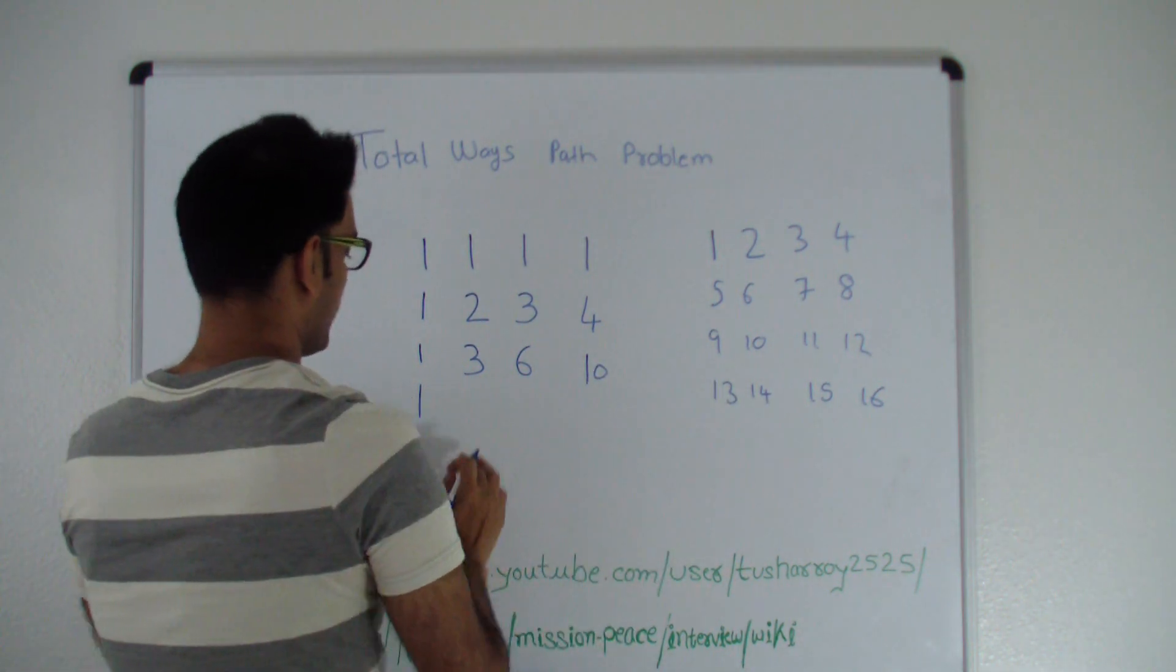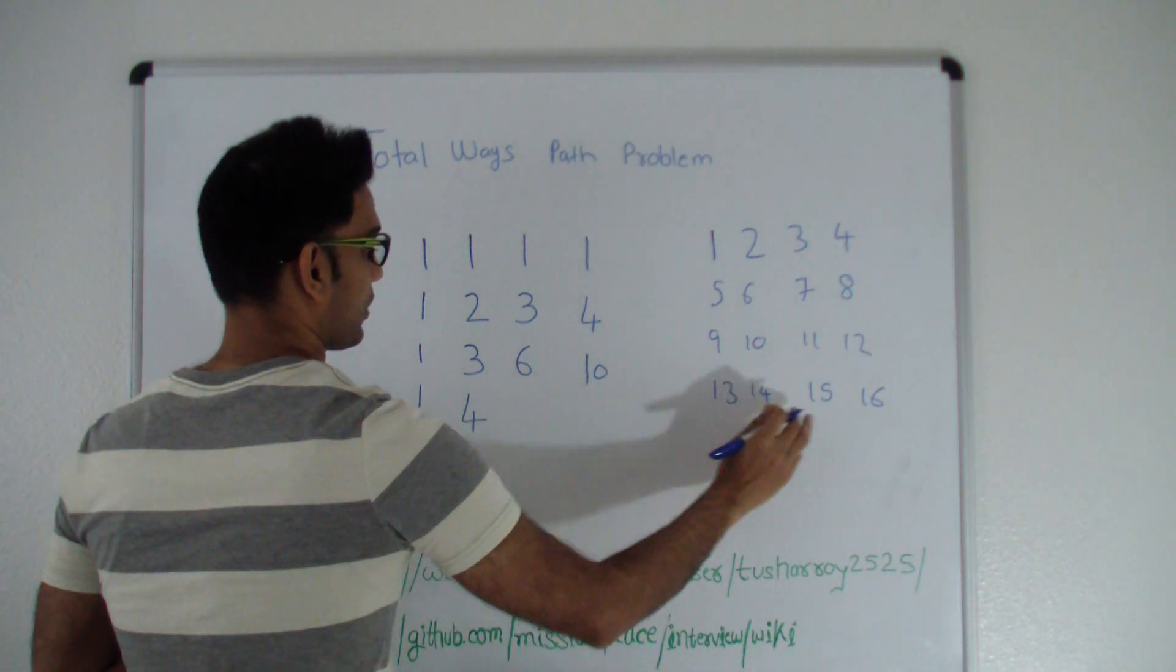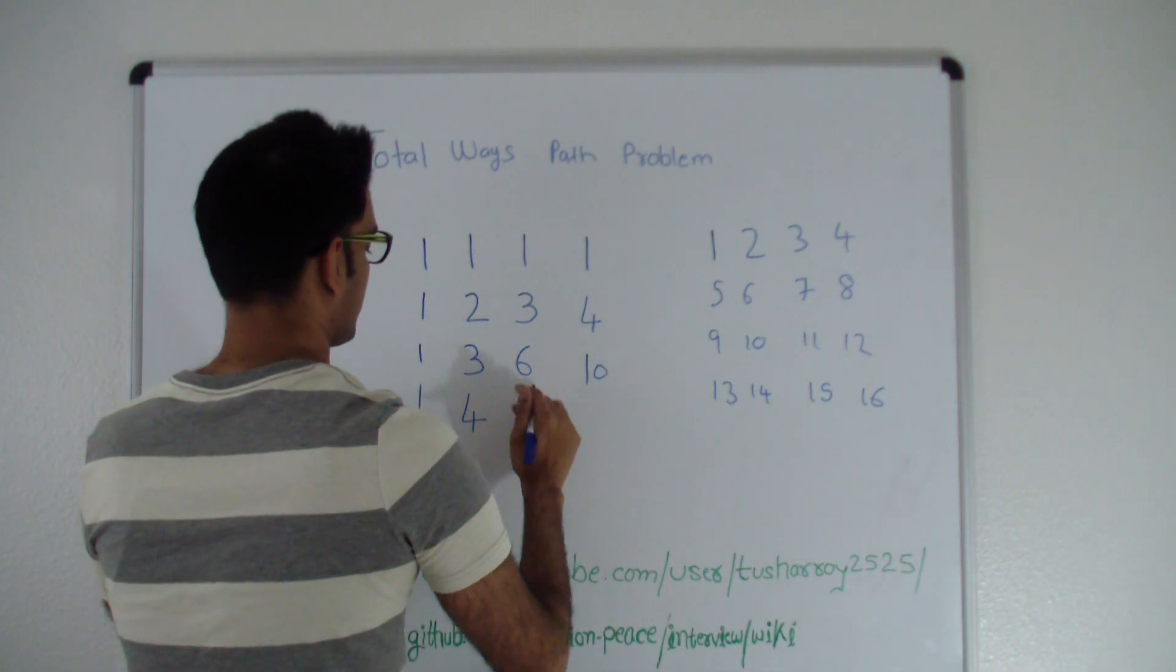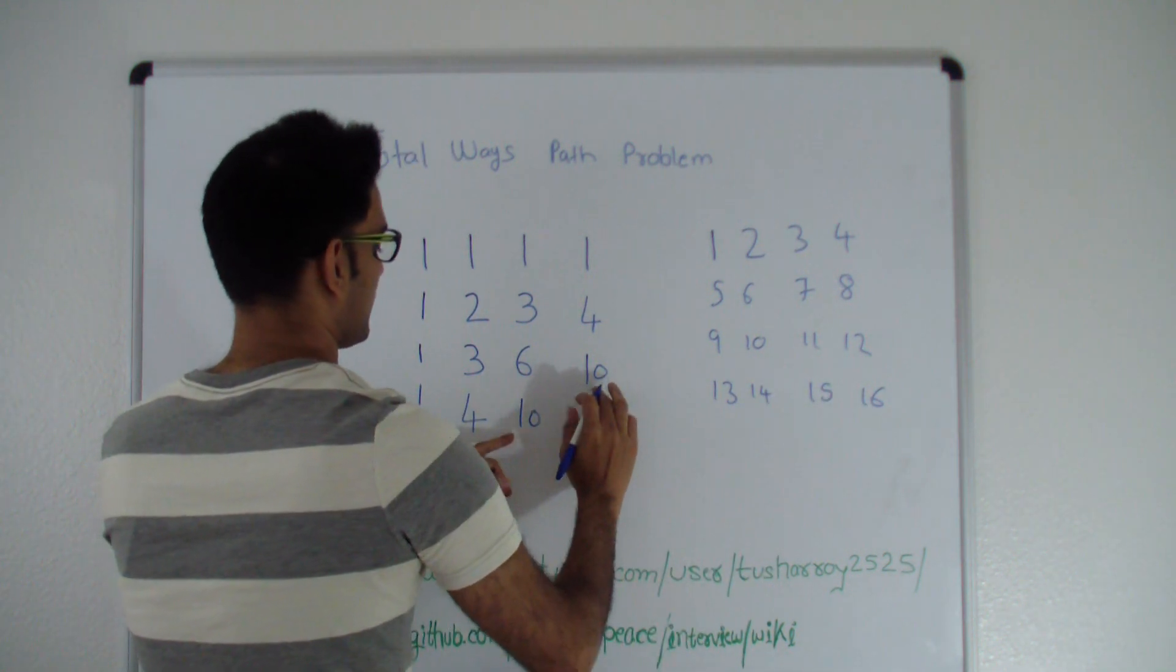Let's fill up the last row. Total number of ways to reach fourteen is one plus three, four. Total number of ways to reach fifteen is six plus four, ten. Total number of ways to reach sixteen is ten plus ten, twenty.